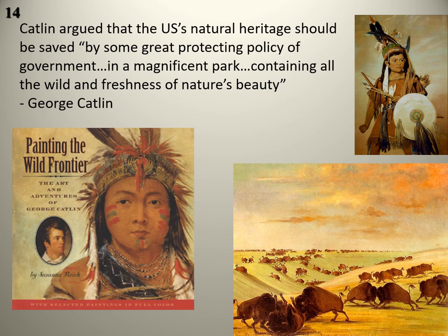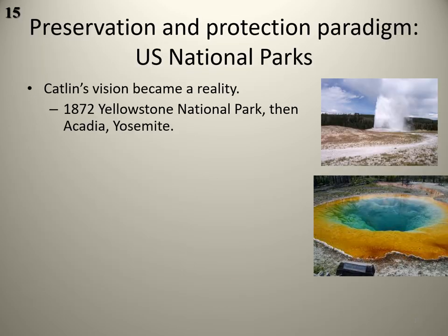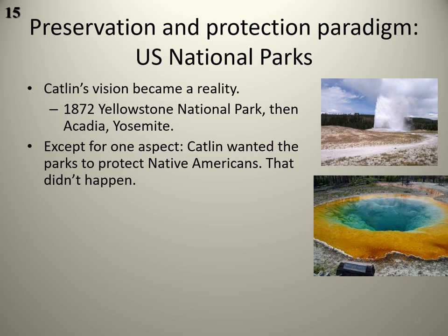Catlin argued that the U.S.'s natural heritage should be saved by government protection in a magnificent park containing all the wild freshness of nature's beauty. His vision resulted in the parks protection and preservation paradigm. In 1872, Yellowstone National Park was established in Wyoming, followed by Acadia in Maine and then Yosemite. However, one major aspect of Catlin's vision was left out: his desire to protect Native Americans, their lives, their culture, and their way of life — that didn't happen.